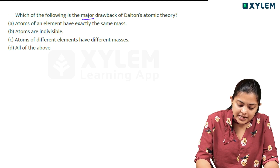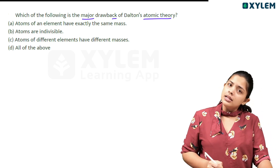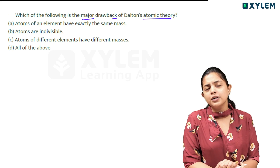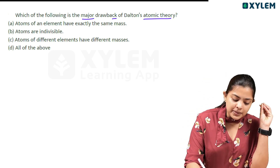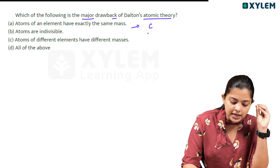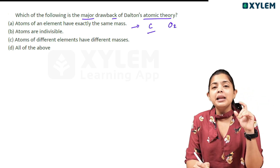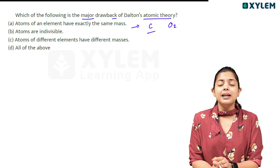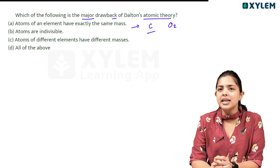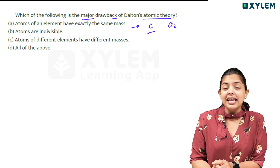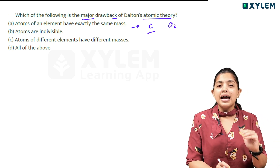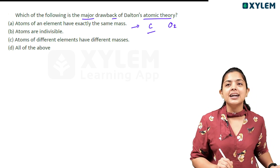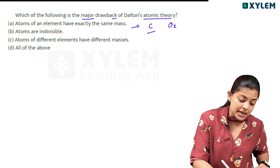Which of the following is the major drawback of Dalton's atomic theory? One option is that atoms of an element have exactly the same mass. If you have an element like carbon or oxygen, those are called atoms. Another option is that atoms are indivisible. However, atoms can actually be divided — that is the major drawback of Dalton's atomic theory.